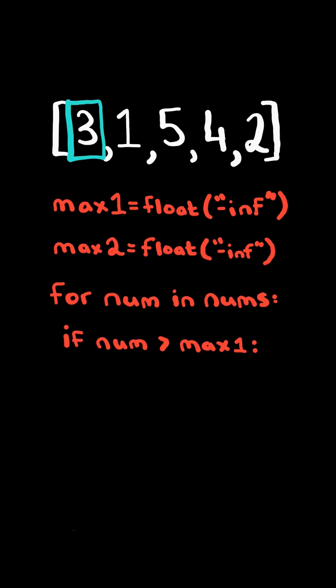If the number is greater than max1, we move down max1 and set it to max2, and set max1 to the current number.